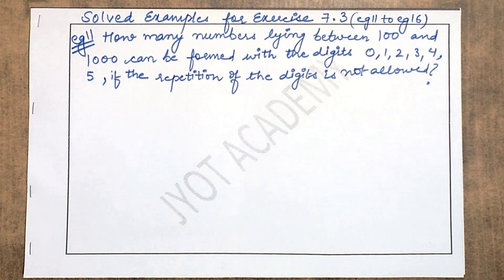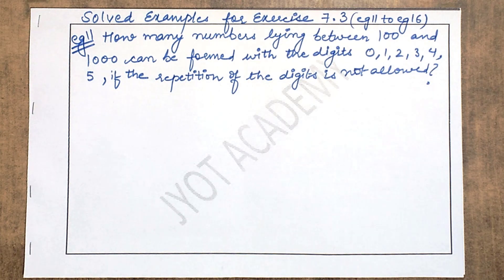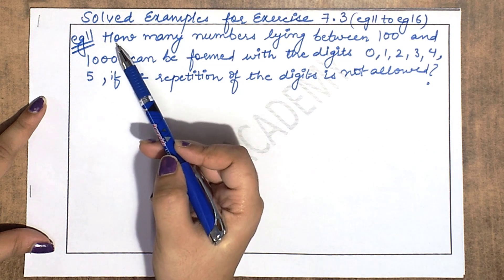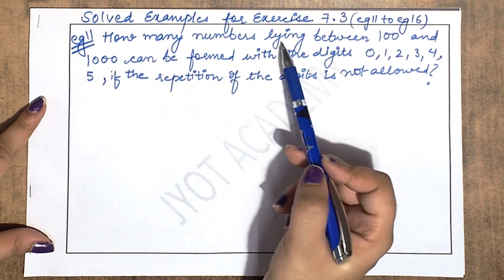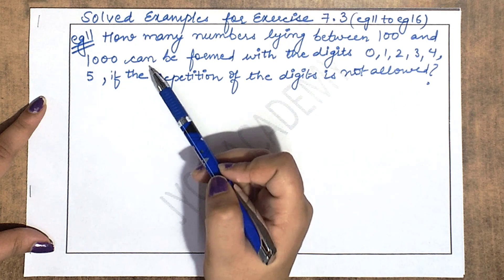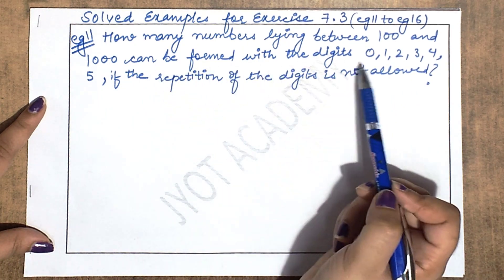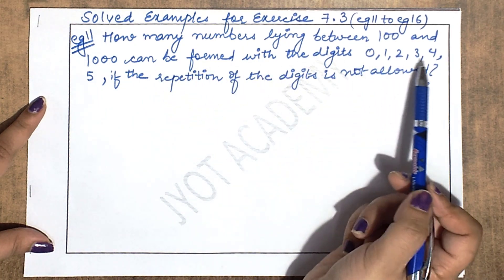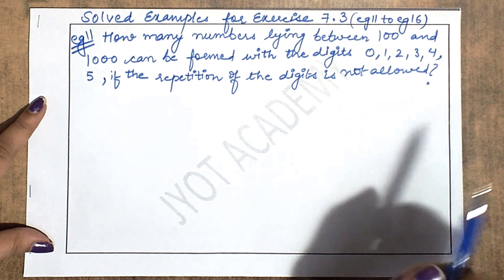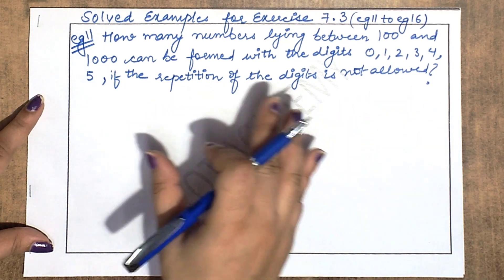Hello students, welcome back to my YouTube channel. Aaj hum dekhenge Exercise 7.3 ke solved examples from Example 11. Example 11 mein given hai: how many numbers lying between 100 and 1000 can be formed with the digits 0, 1, 2, 3, 4, 5 if the repetition of digits is not allowed.